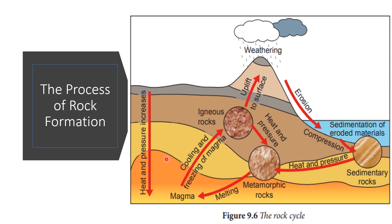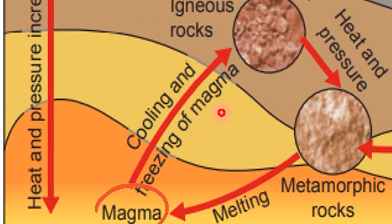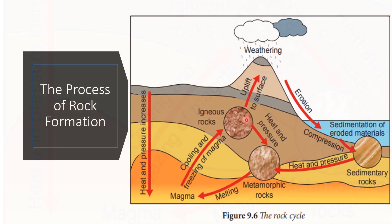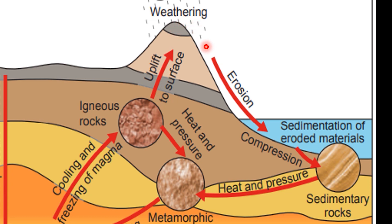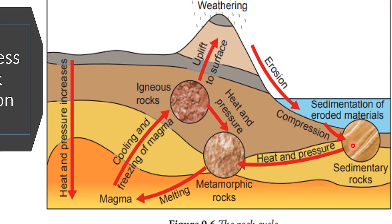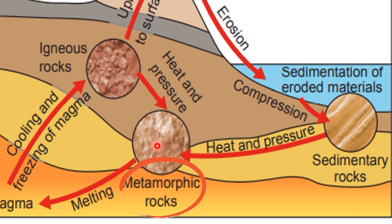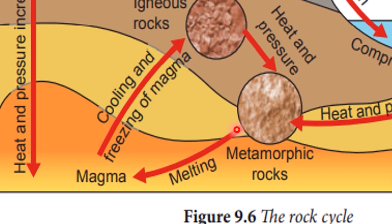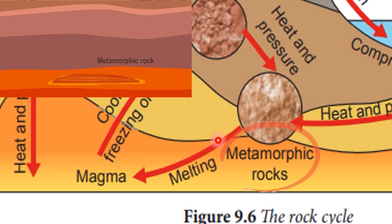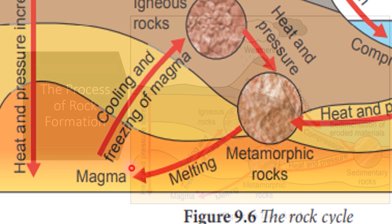The rock cycle involves the formation of new rocks, destruction or changes of the types of rock due to erosion, weathering and magmatic activity. The process of cooling and freezing of hot magma forms igneous rock. The process of weathering and erosion of igneous rock forms sedimentary rock. The transformation process due to very high temperature and pressure on igneous rock and sedimentary rock forms metamorphic rocks. The process of melting due to very high temperature on metamorphic rock forms magma again. The rock cycle continues.